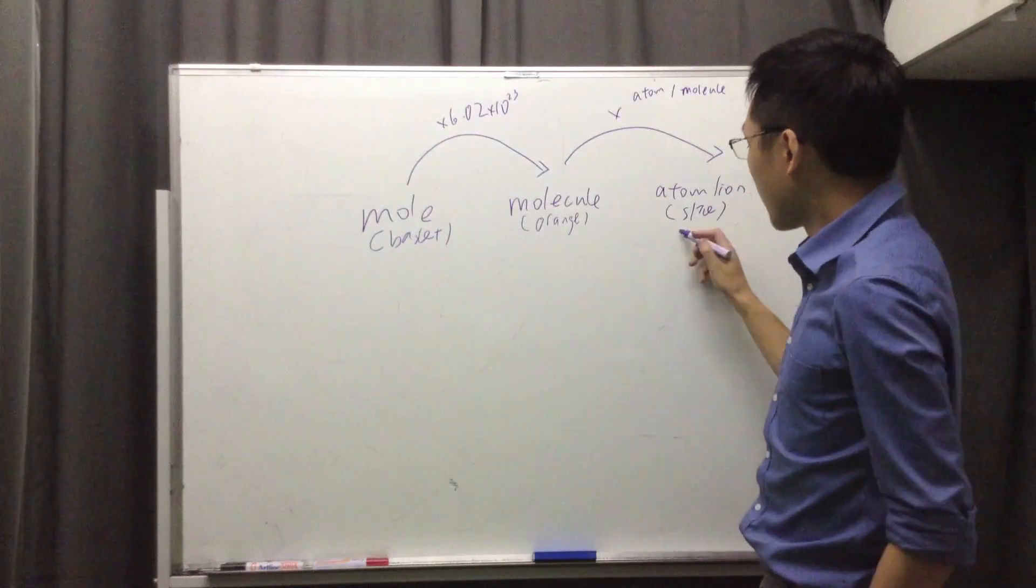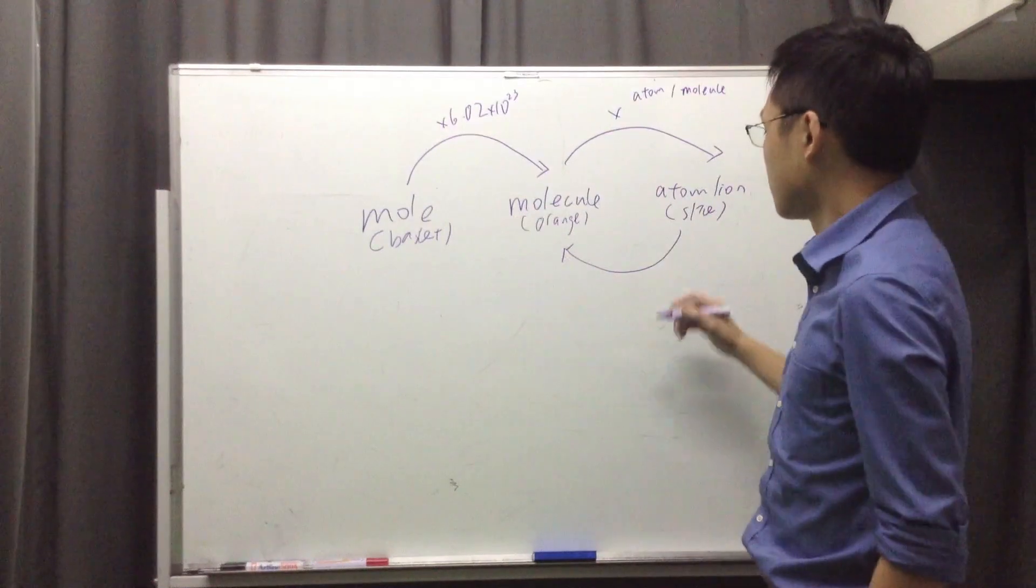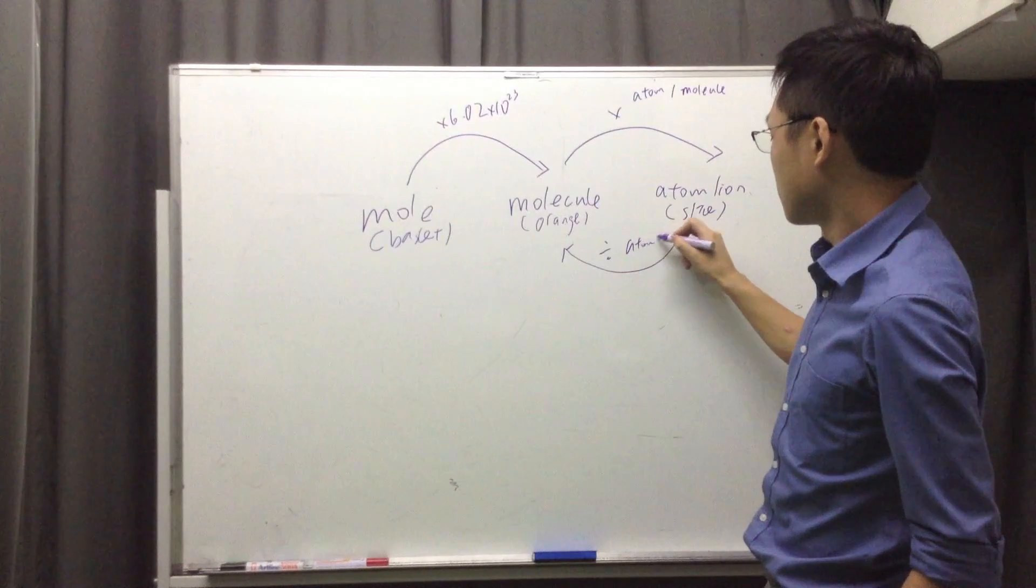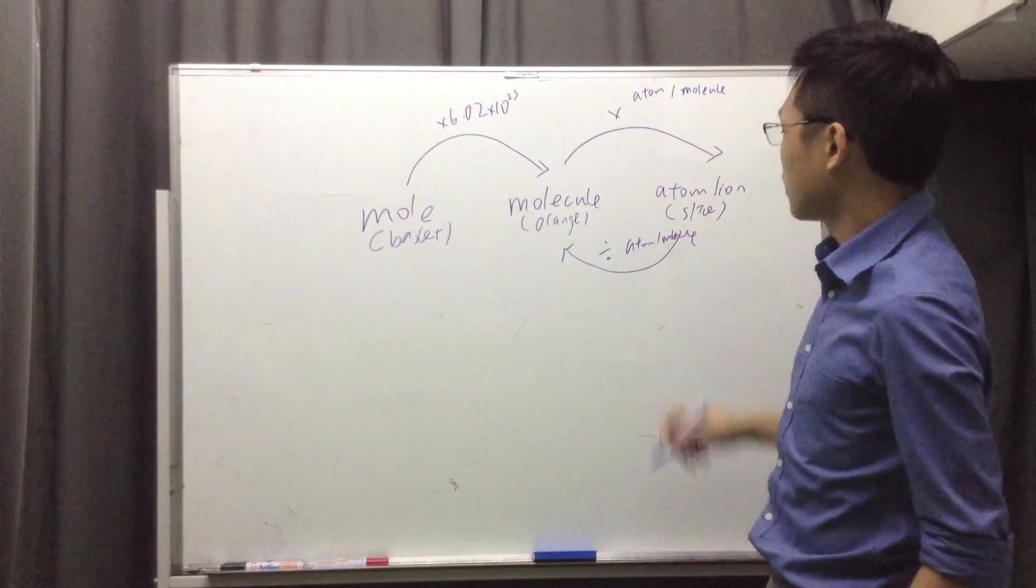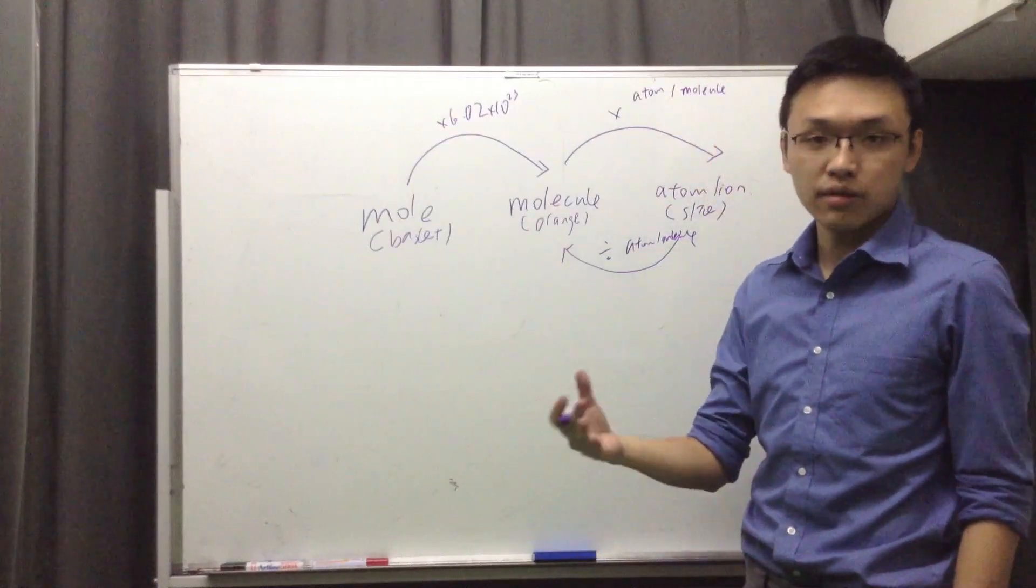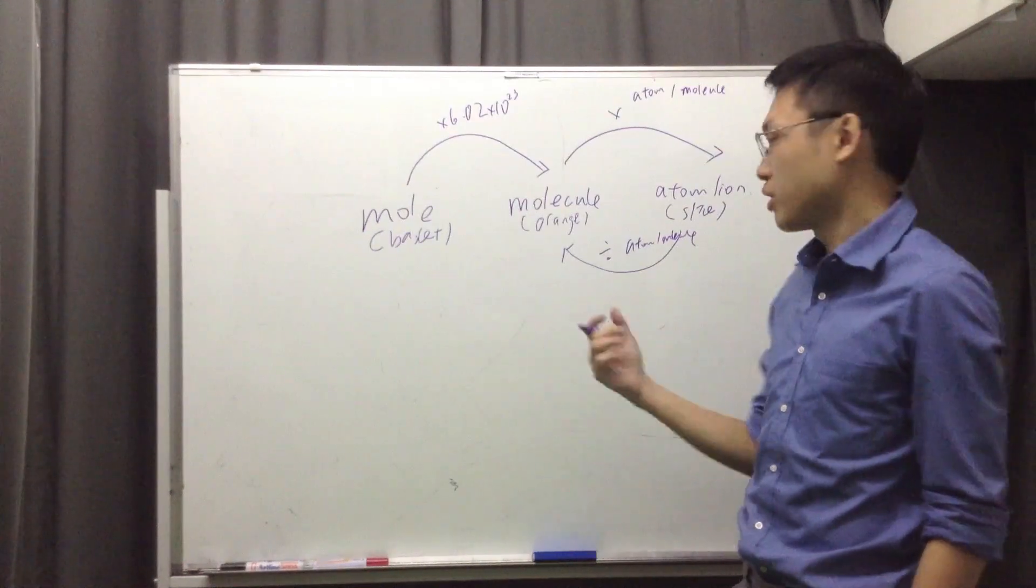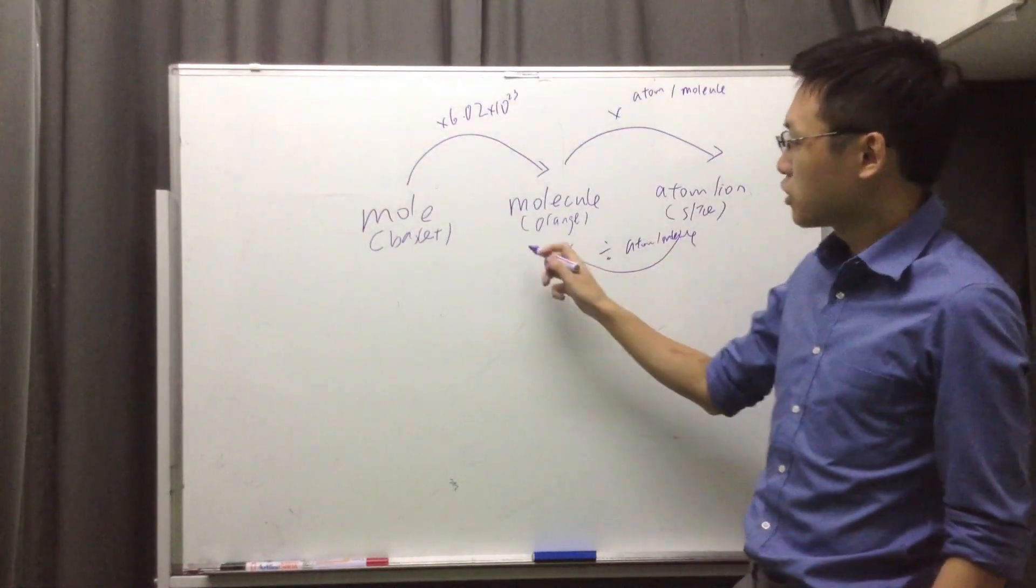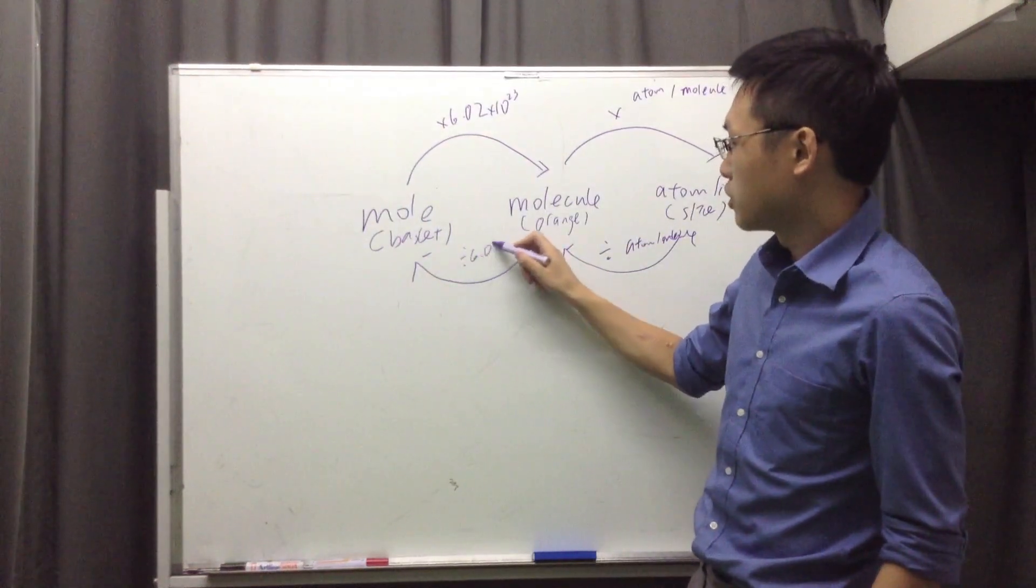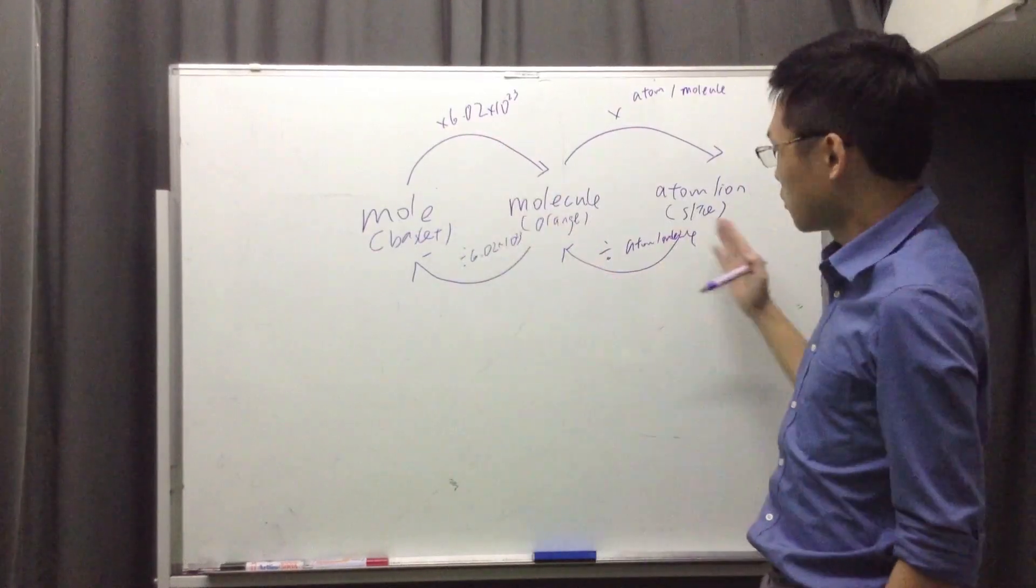And if you want to go the other way around, you can simply use the reverse process, right? So you simply divide. You divide by the number of atoms per molecule. So if I tell you there are five slices of orange per orange, how many oranges are there? You will divide to get how many oranges. Just like that. If you go from molecule to mole, you divide by 6.02 times 10 to the 23rd, which is the opposite of what we did here. So the reverse is the opposite.